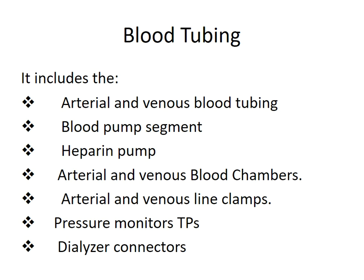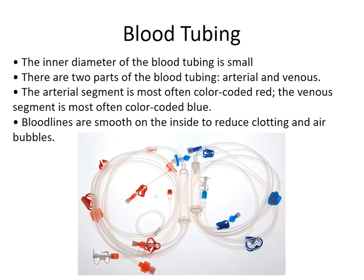The blood tubing includes the arterial and venous blood tubing, the blood pump segment, heparin pump, arterial and venous blood chambers, arterial and venous line clamps, pressure monitors, transducer protectors, and dialyzer connectors. The arterial segment is color-coded red and the venous segment is color-coded blue. The inner diameter of the blood tubing is small, and the blood tube should be smooth on the inside to reduce clotting and air bubbles.